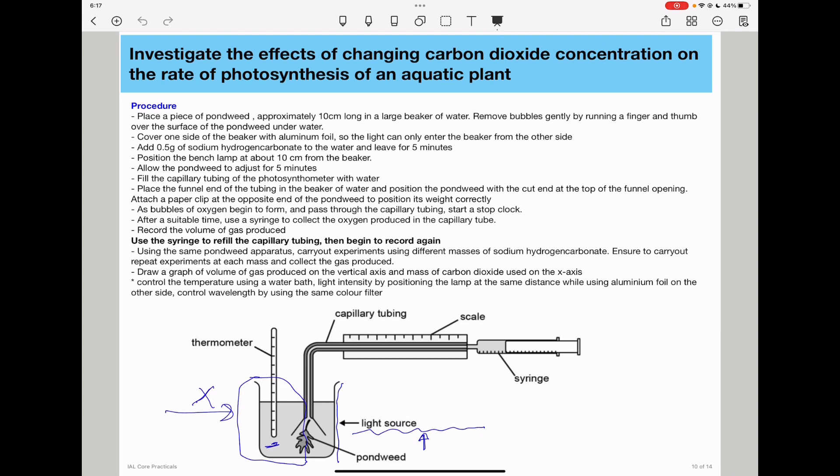Control light intensity by positioning the lamp at the same distance from the experimental setup while using aluminum foil on the other side to prevent light entering from that direction. Control wavelength by using the same color filter throughout all experiments.